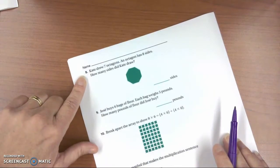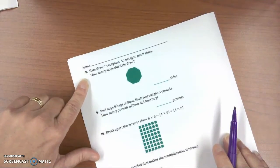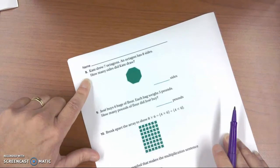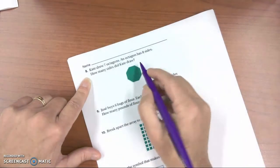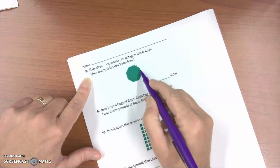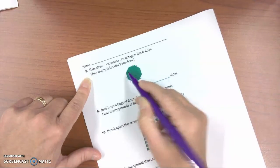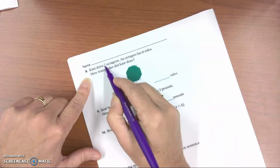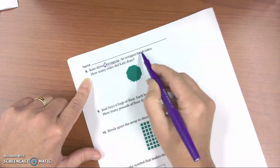Kate drew 7 octagons. An octagon has 8 sides. How many sides did Kate have? So we want to know how many sides Kate had. Here's a picture of an octagon: 1, 2, 3, 4, 5, 6, 7, 8 sides. She drew 7 of those, 7 octagons.